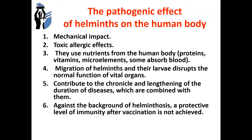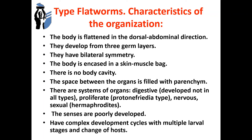Let's speak about the type flatworms. There are four common characteristics of the organization: the body is flattened in the dorsal-abdominal direction; they develop from three germ layers; they have bilateral symmetry; and the body is encased in the skin-muscle sac. There is no body cavity — the space between the organs is filled with parenchyma. There are systems of organs: digestive (developed not in all types), excretory of protonephridial type, nervous, and sexual (hermaphrodites). The senses are poorly developed. They have complex development cycles with multiple larval stages and changes of hosts.